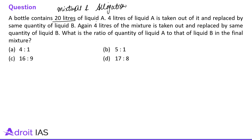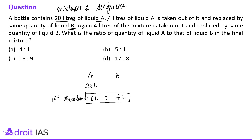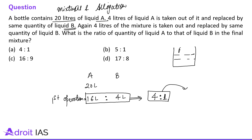After the first operation, 4 liters of A has been taken out and the same quantity of B has been poured in. So the ratio of liquid A to liquid B in the bottle is 4 to 1. Anything taken out from this mixture will come out in the ratio of 4 to 1. So for the second operation, when 4 liters of mixture is taken out, it comes out in the ratio of 4 to 1.